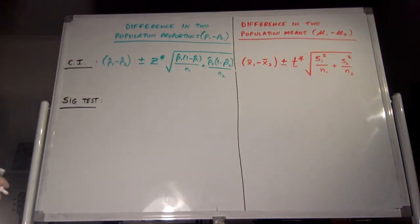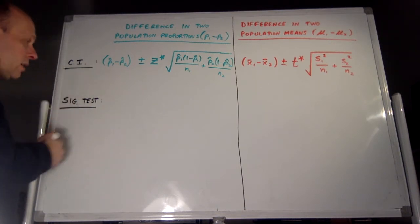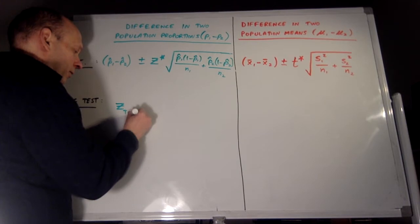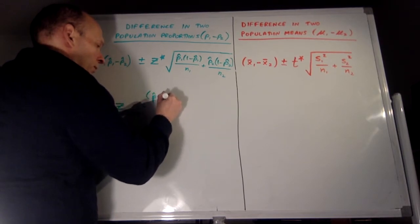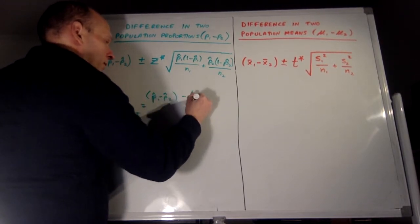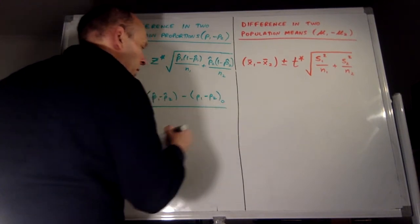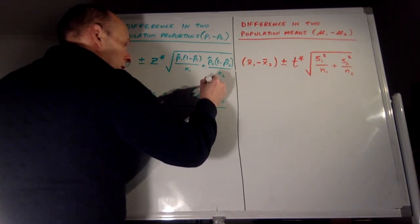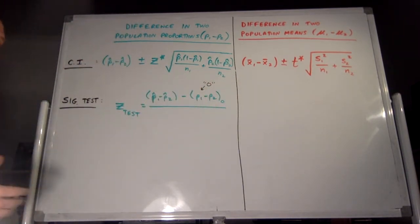That's the structure for the confidence interval when you're estimating the difference in two population means. Now we're moving on to significance tests. The test statistic for the difference in two proportions is going to be a z test statistic — z goes with proportions. Our z test statistic will be the estimate, p-hat 1 minus p-hat 2, minus the hypothesized p1 minus p2 (call that p1 minus p2 naught). When we're dealing with proportions, this hypothesized value is going to be zero — we're really only going to see proportion problems where the true difference is hypothesized to be zero.